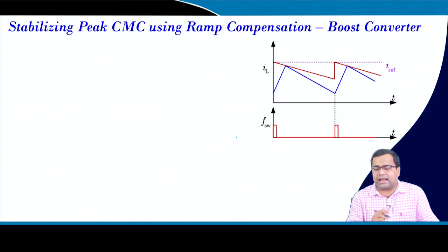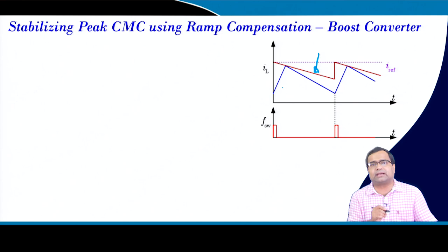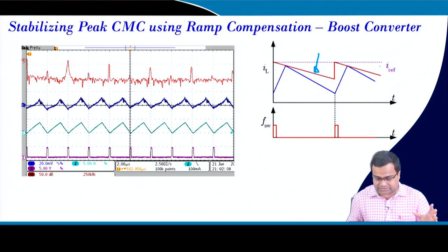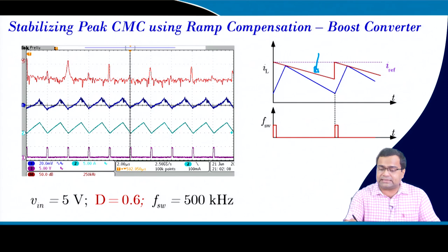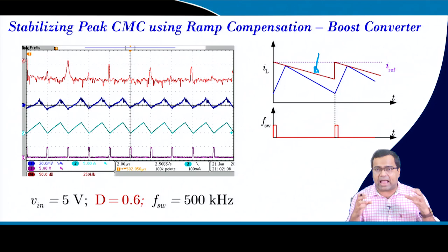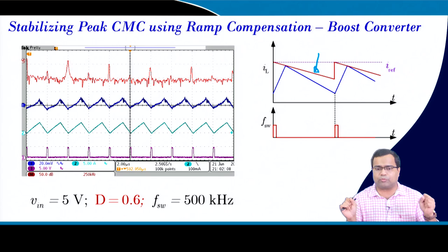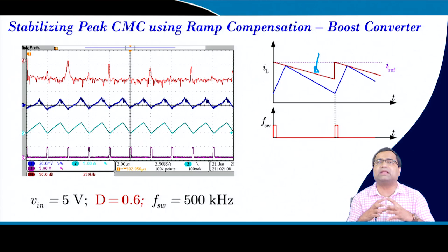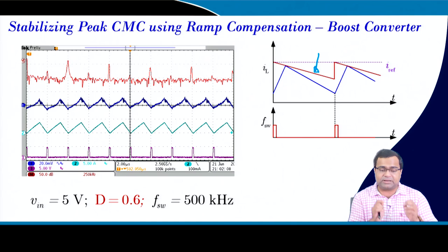If a compensating ramp is added - either added with the inductor current or subtracted from the reference current - the system can be made stable even for wide duty ratio operation. However, as you add more and more ramp, the two poles that current mode control had separated into two first-order poles come closer together and the system tends to behave more like voltage mode control, losing the benefits of current mode control.